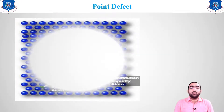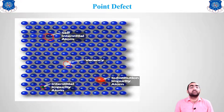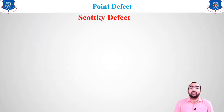We can see all four together: self-interstitial defect, vacancy defect, substitutional, and interstitial defect. These are the four defects caused by atoms. Now, according to ions, two more defects exist — Schottky defect and Frenkel defect.